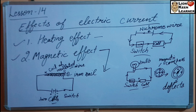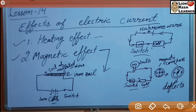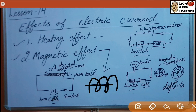Magnetic effect ko hum electromagnet se bhi samjha sakte hain. Jaise ek iron rod hai, aur iske chaaro taraf insulated wire se coil banayi. Is coil ke andar jab bhi current pass karte hain, to yeh behave like a magnet karne lagti hai. Means yeh ek temporary magnet hai, but it is stronger as current becomes higher - jaise jaise current zyada hota jaayega, yeh strong hoti jaati hai. Aapne dekha hoga ki bahut si heavy load uthane wali cranes hain, unme magnet se hi woh apna kaam poora karti hain.